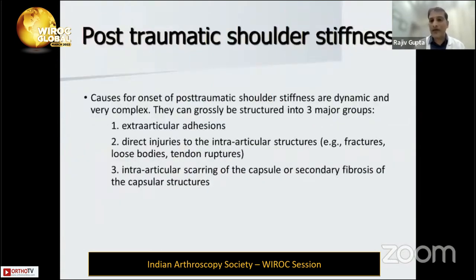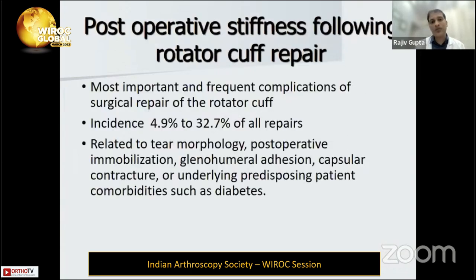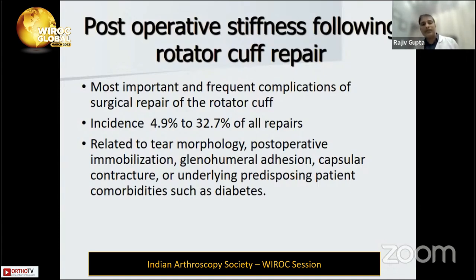For post-traumatic shoulder stiffness, we divide into three major groups: extra-articular adhesions, direct injury to intra-articular structures like loose bodies, tendon ruptures and fractures, and scarring due to capsular and muscle damage. The most common stiffness in practice is after rotator cuff repair — mainly in abduction. Remaining sutures can create fibrosis in the subacromial space. Incidence is around 30 to 32 percent, and the main reasons are post-operative immobilization, glenohumeral and subacromial adhesions, diabetes, and underlying predisposing factors.